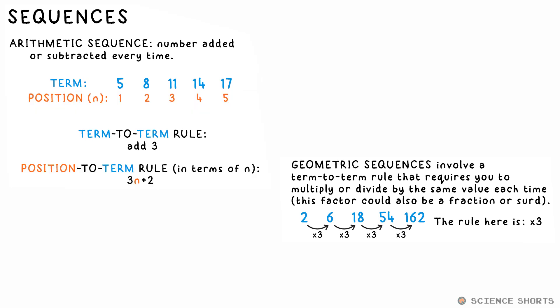We also have position-to-term rules instead. Basically, the first term in the sequence, we can assign the position one, the second term has position two, etc. So if we call the position n, then we can say that for this sequence here, the position-to-term rule is 3n plus 2.